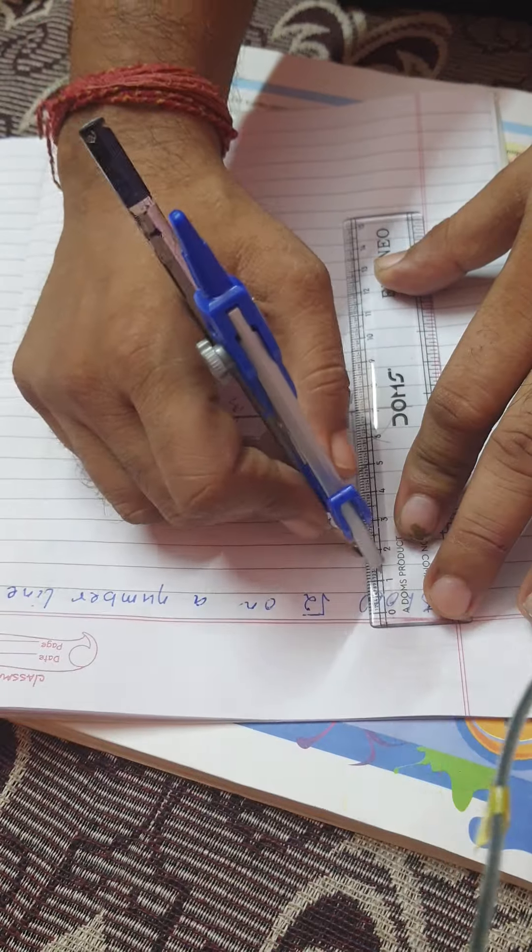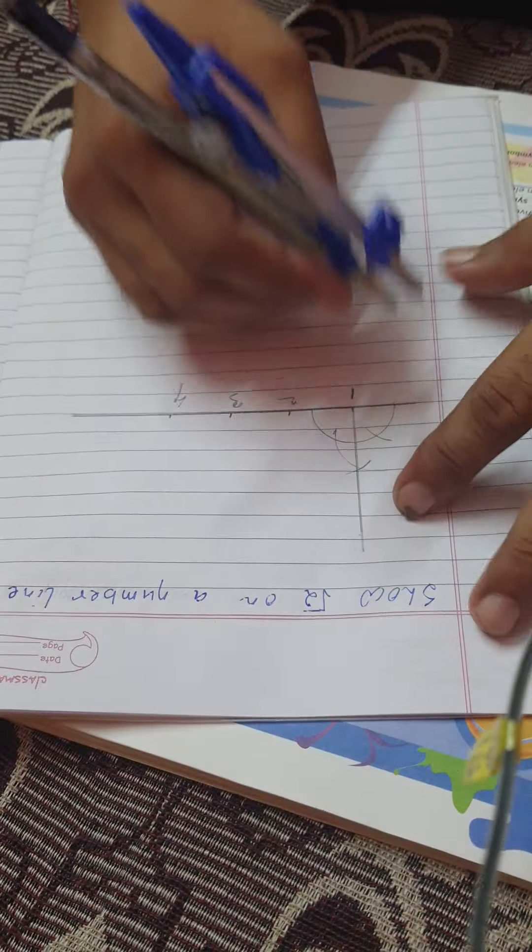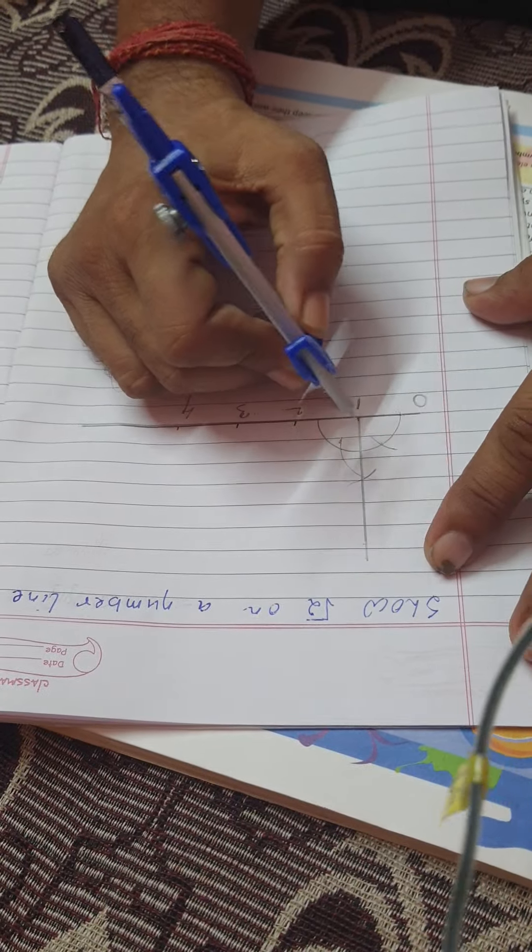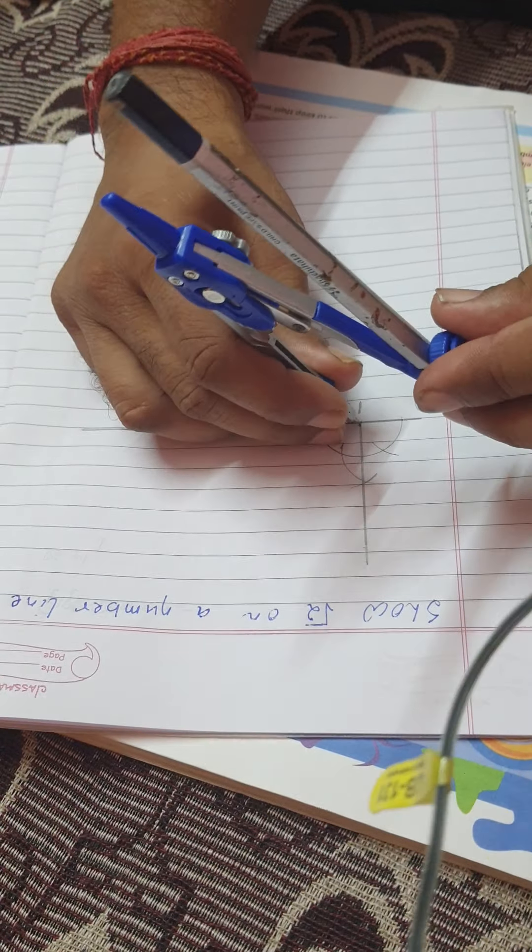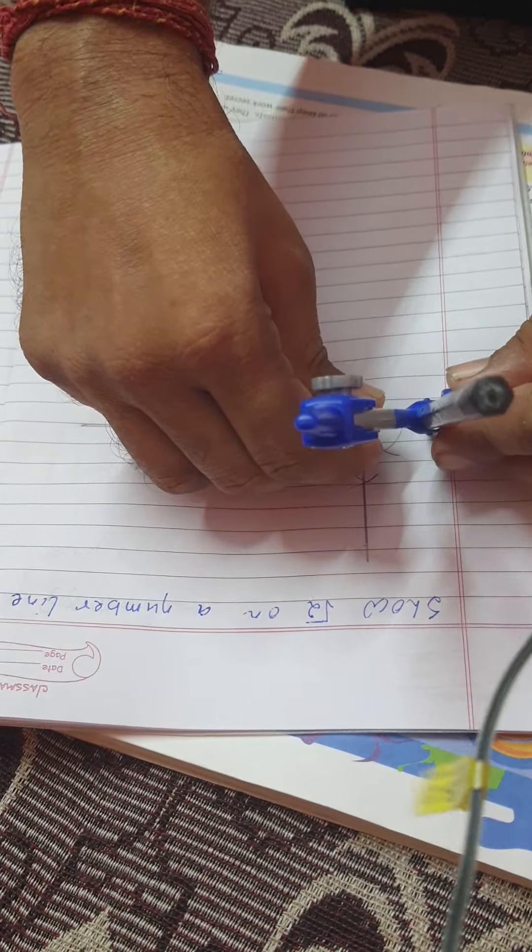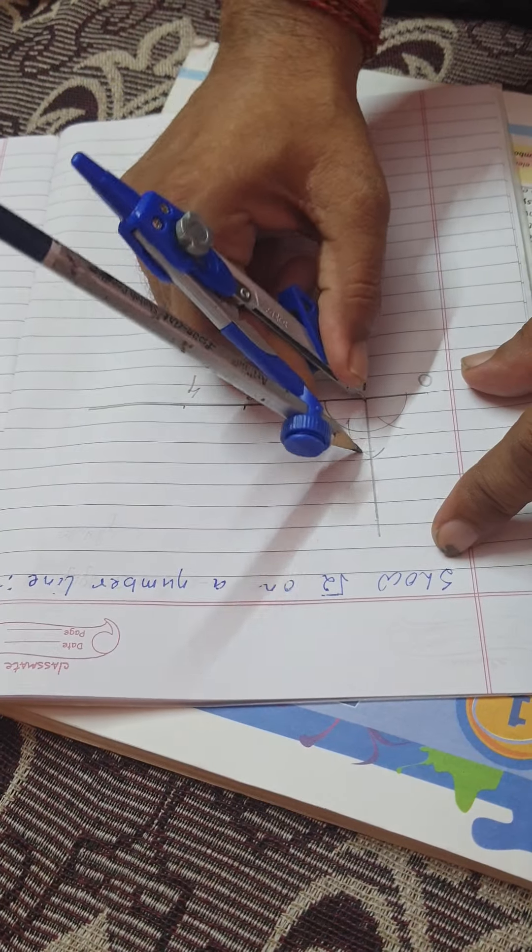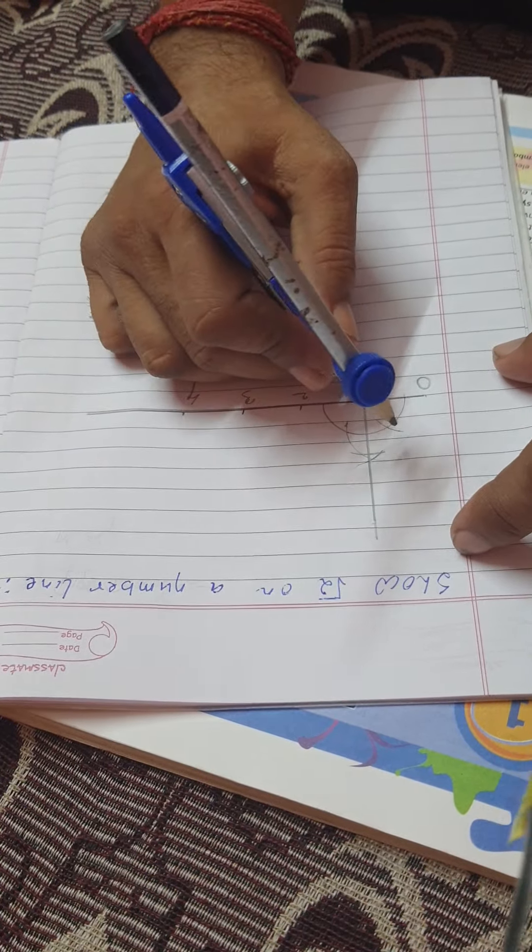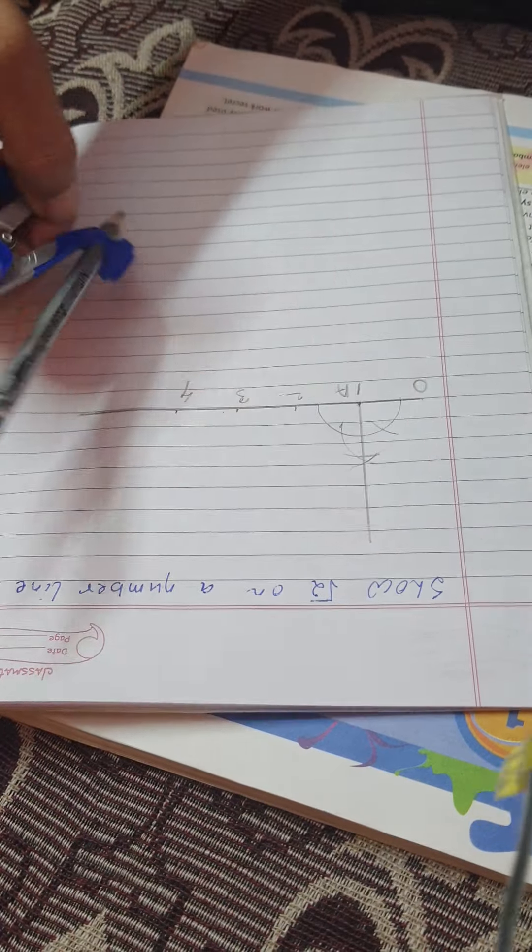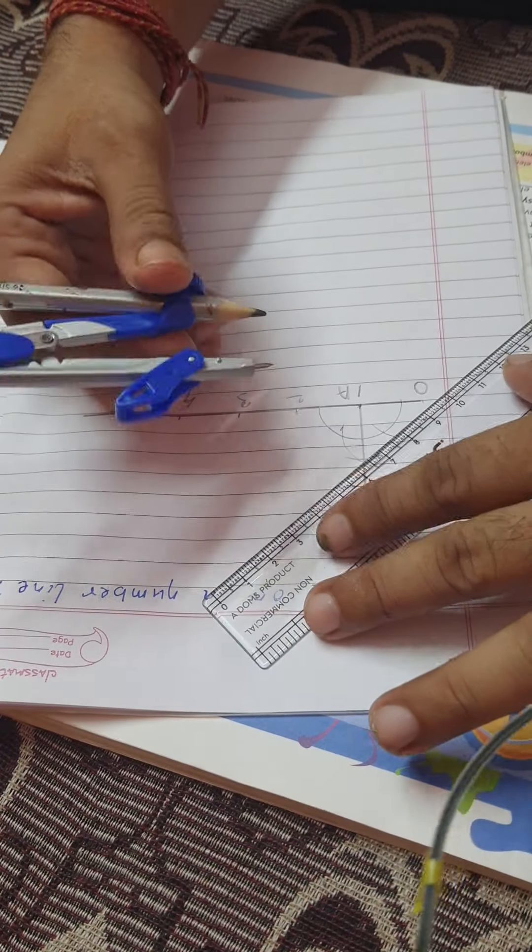This is the perpendicular we have made. After making the perpendicular, we will take this point as O and this as A. We will take OA as the arc and cut. This OA is equal to this arc, and then we join OA.